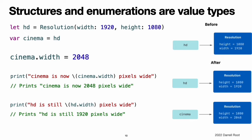Note: collections defined by the standard library, like arrays, dictionaries, and strings, use an optimization to reduce the performance cost of copying. Instead of making a copy immediately, these collections share the memory where the elements are stored between the original instance and any copies. If one of the copies of the collection is modified, the elements are copied just before the modification. The behavior you see in your code is always as if a copy took place immediately.